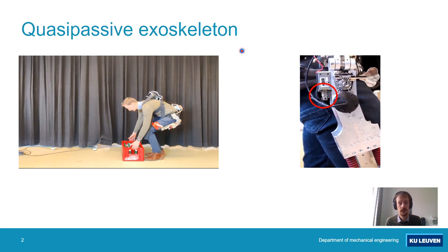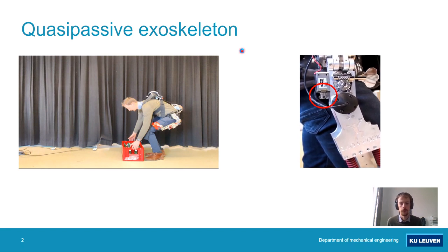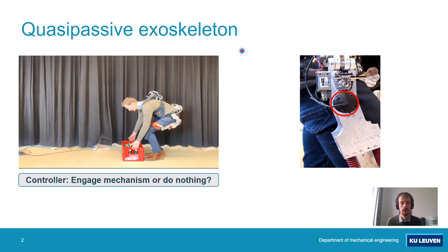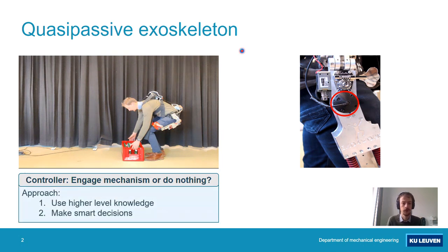As soon as a solenoid is engaged, a user will start to feel support when flexing forward. Apart from the solenoid, the exoskeleton also contains encoders, one located on each of the hip joints, such that we can register the hip flexion angles. The controller for this exoskeleton needs to decide whether to engage the support mechanism in the hips or do nothing. Our approach is to use higher-order knowledge about the motions being executed to make smart decisions, and we do this using decision theory.